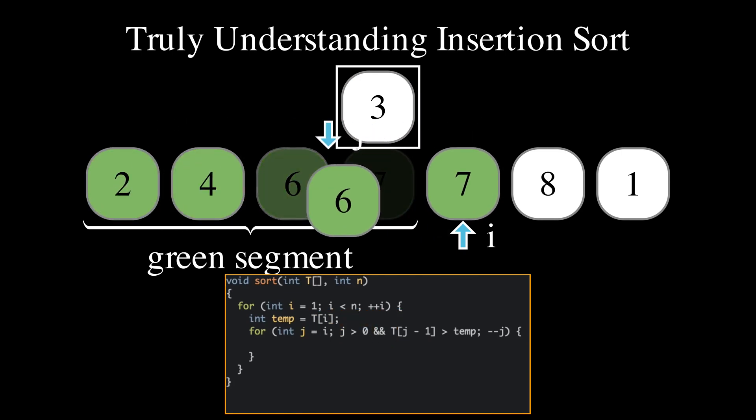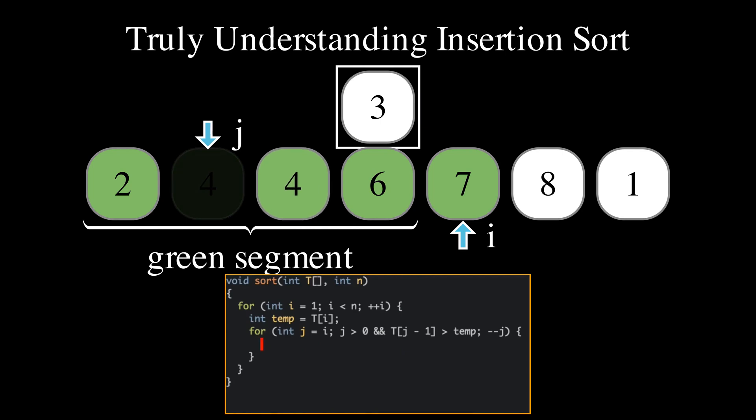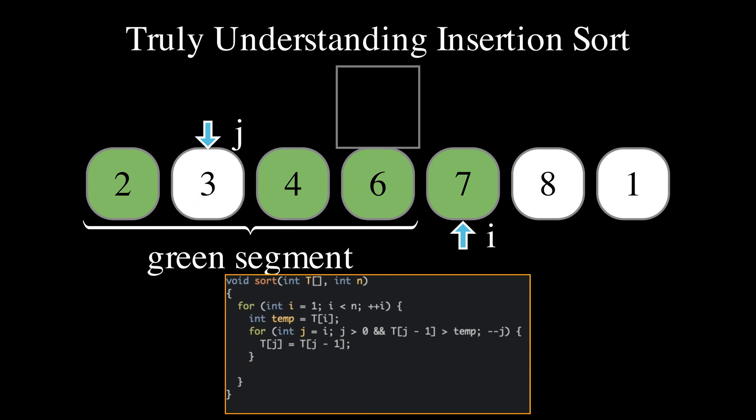Each element larger gets shifted by one position towards the right. We store the current element in the array at the position freed by the last element shifted. As we use the index j after the inner loop exits, we must declare j outside of the loop scope for the code to compile.